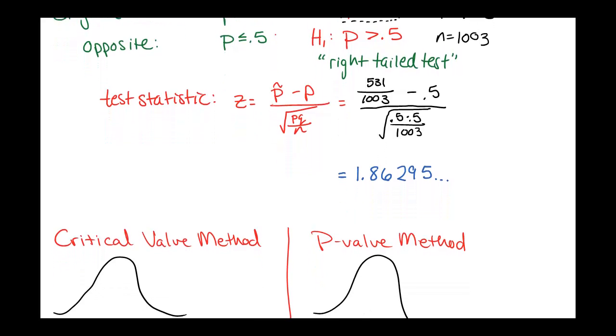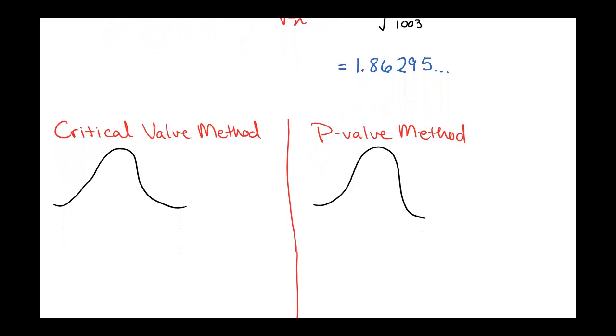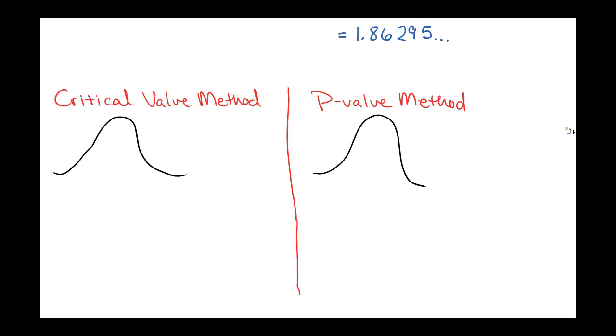Once you've got the test statistic, there's two different ways that you can do hypothesis tests. One is the critical value method and one is the p-value method. And I'll go through both and we can talk about the differences. So with the critical value method, I'm thinking about taking our normal distribution. And since this is a right-tailed test, I'm thinking about this right-hand end of the distribution. And with the critical value method, like with our confidence intervals, we're looking for a critical value, a z-score, to divide off the critical region.